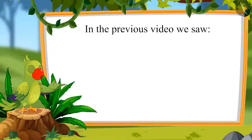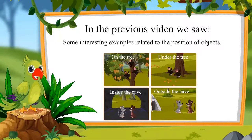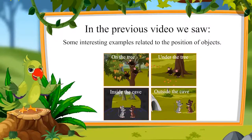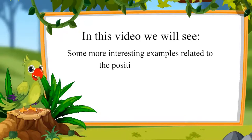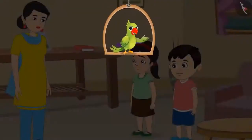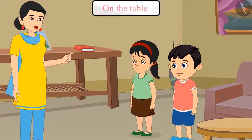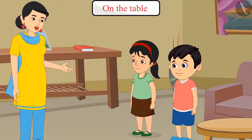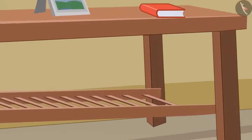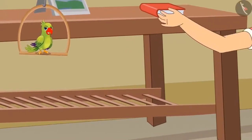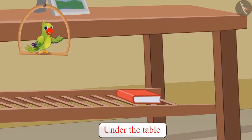In the previous video, we saw some interesting examples related to position. Today, Chotu and Pinky are helping their mother clean the house. Their mother said, 'Chotu, your math notebook is kept on the table. Keep it under the table.' Chotu picked up his math notebook from the table and kept it under the table.